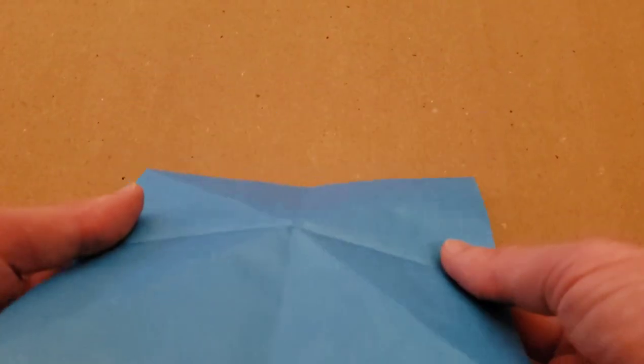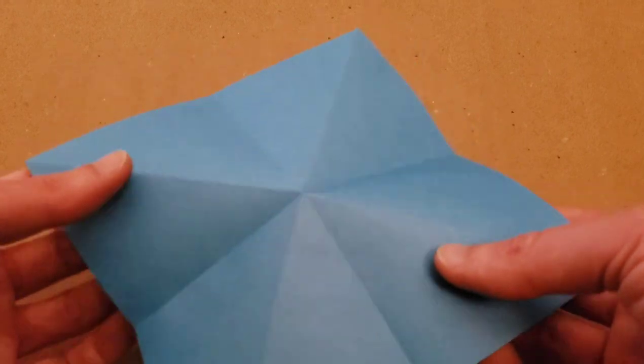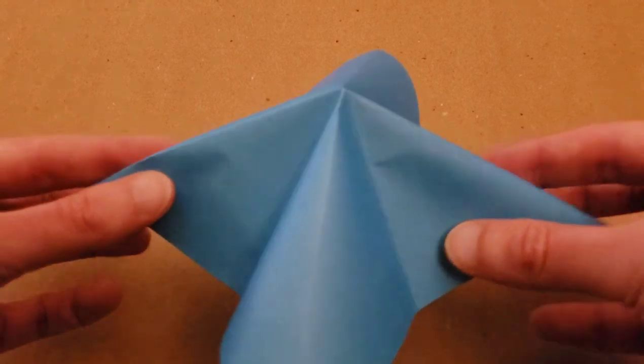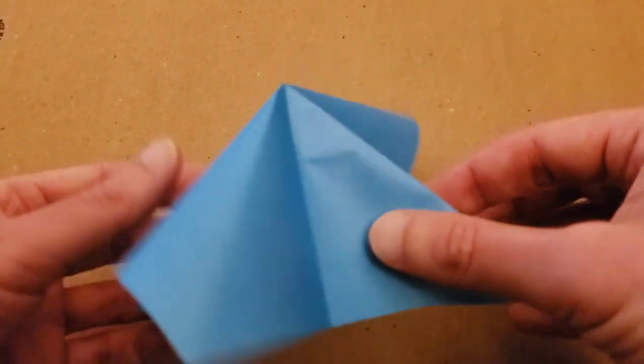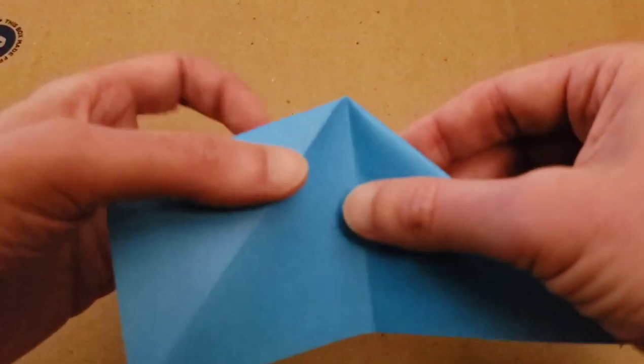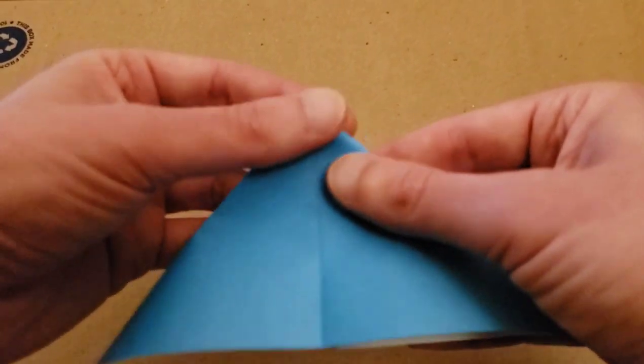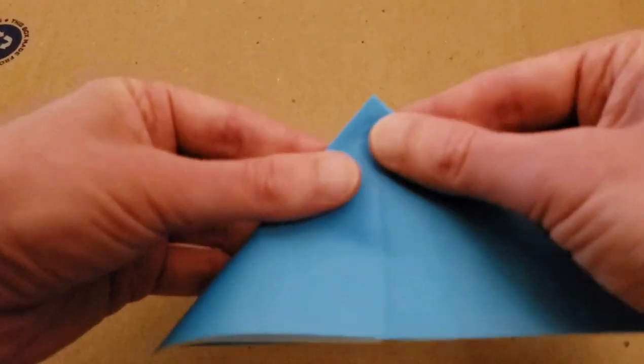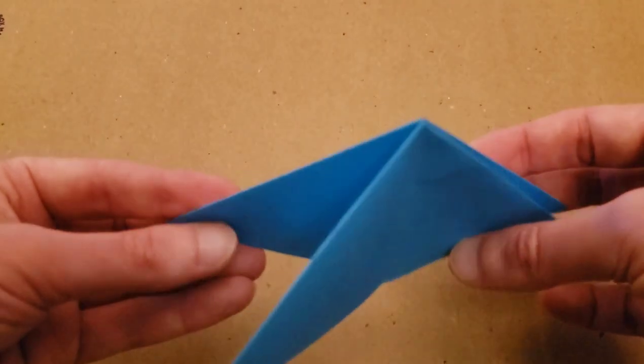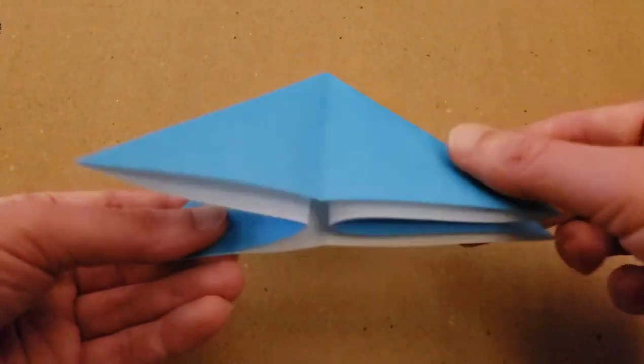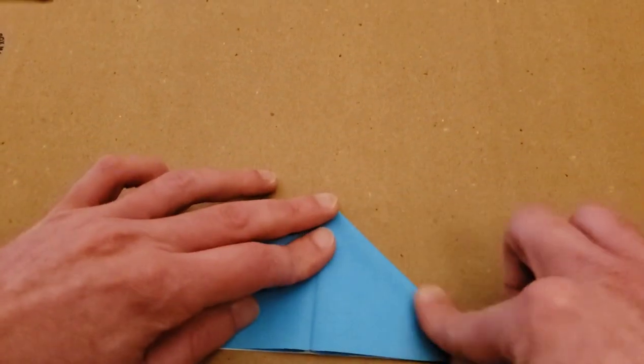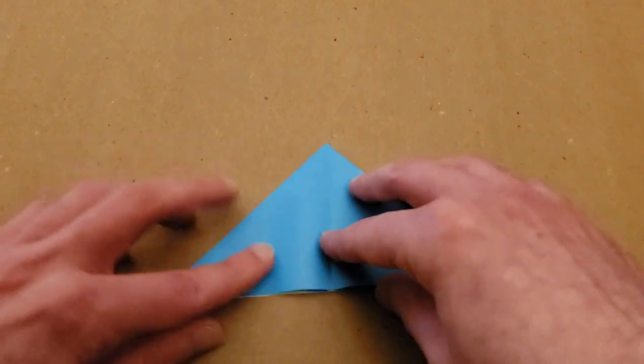So pop the center up, and we're going to fold along these mountain folds, and sort of squish, and then flatten it out so that we have a triangle. And so we've got two flaps in the front and two in the back, and it's open at the bottom. Alright. So that is our base.